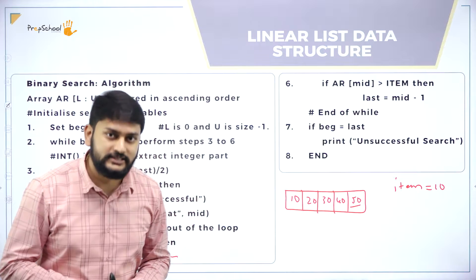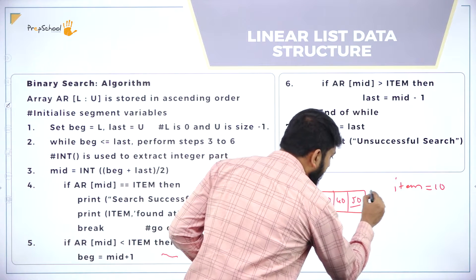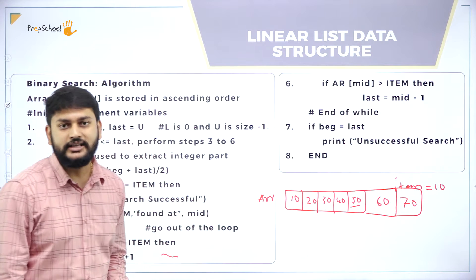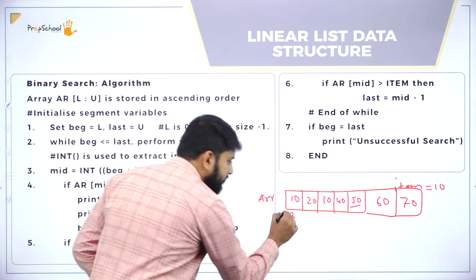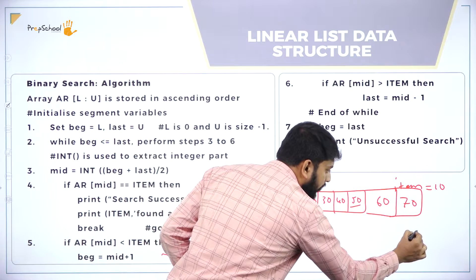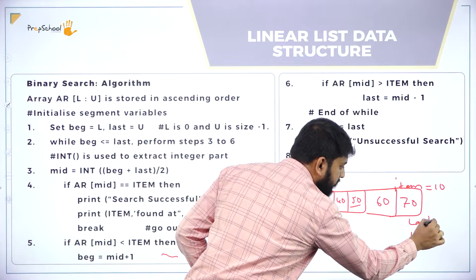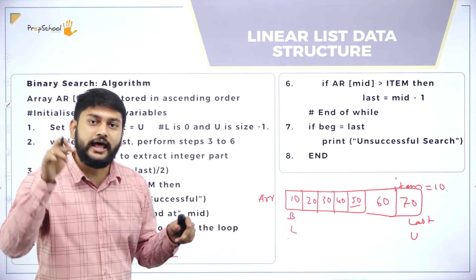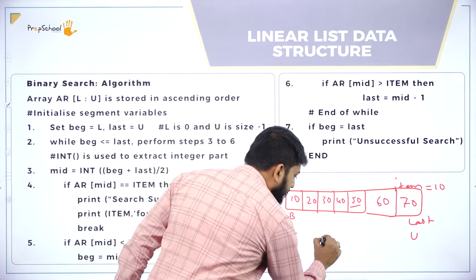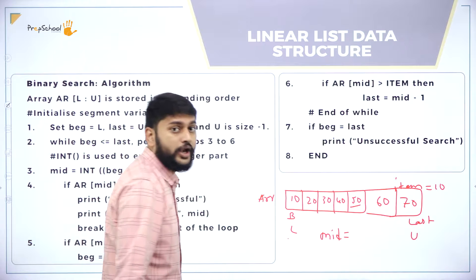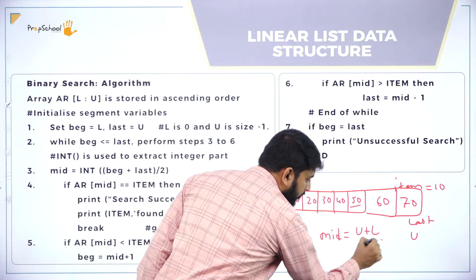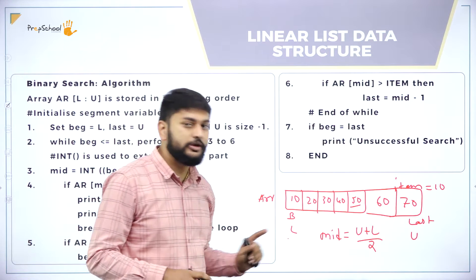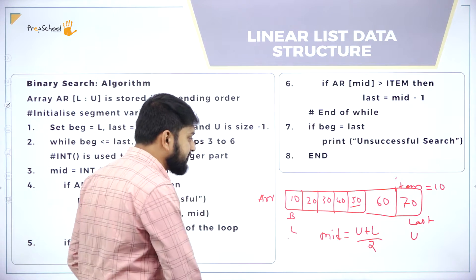To solve this problem we have a concept called binary search. Imagine I have a list like this — 60, 70 — the name of this list is arr. This is what I call the beginning, and this is what I call the end. The beginning is the lower bound and the end is the upper bound. In binary search, I will calculate the mid value. The formula is: upper bound plus lower bound divided by 2, or lower bound plus upper bound divided by 2. This formula gives me the mid value.